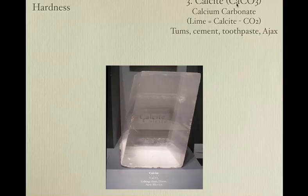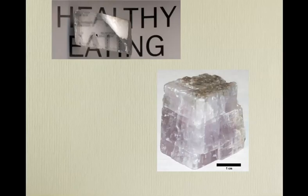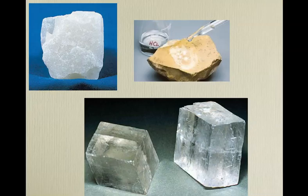Number three on the hardness scale: calcite — calcium carbonate. If we heat this up, we drive off CO₂ and that leaves calcium and oxygen. Lime is calcite minus CO₂. We use calcite in Tums, cement, toothpaste, and Ajax. Nice thing about calcite: if you get a clean piece called Iceland Spar, it has double refraction — you can see through it and see images twice. Calcite reacts with dilute hydrochloric acid; it's the only mineral that does that — except for aragonite and dolomite, but they don't do it as well.